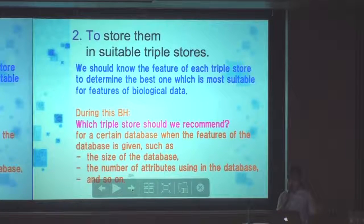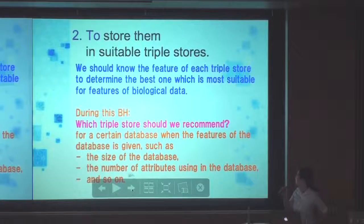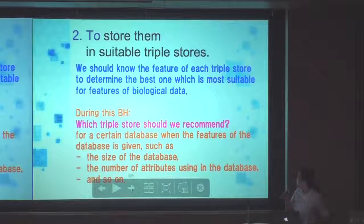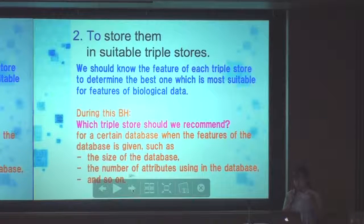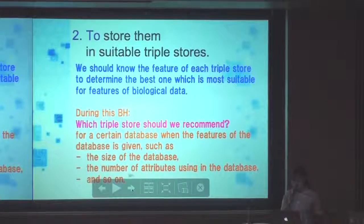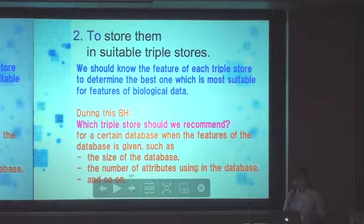The second step is to store the RDF data in suitable triple stores. To do this, we should know the features of each triple store to determine the most suitable one for life science data. During this BioHackathon, I would like to discuss which triple stores we should recommend for certain databases, given features such as the size of the database or number of attributes used.